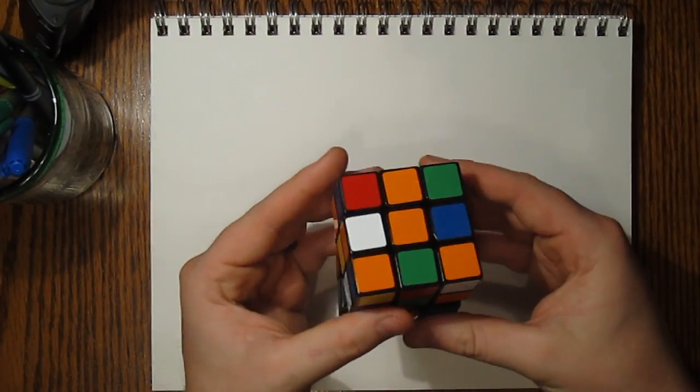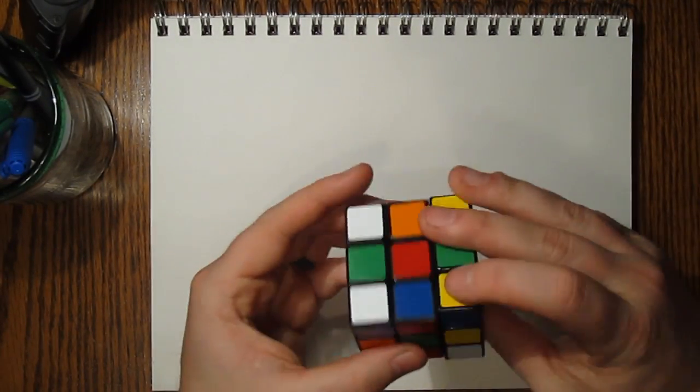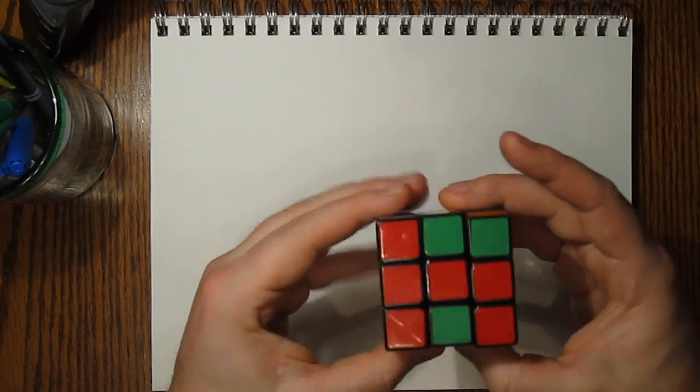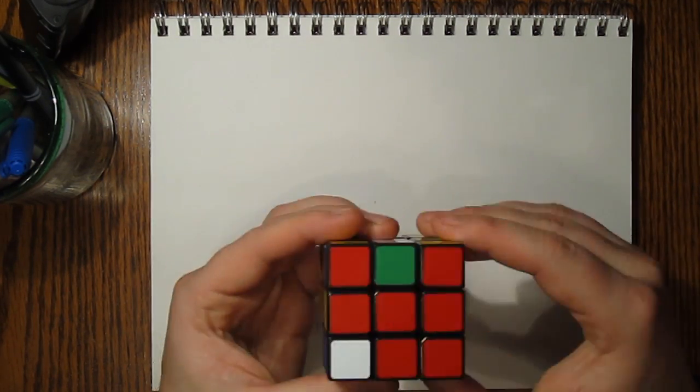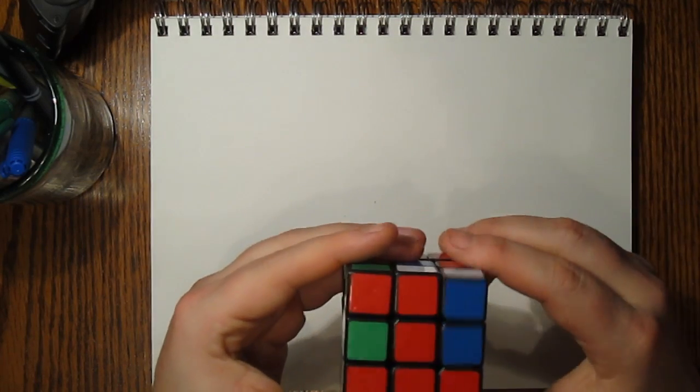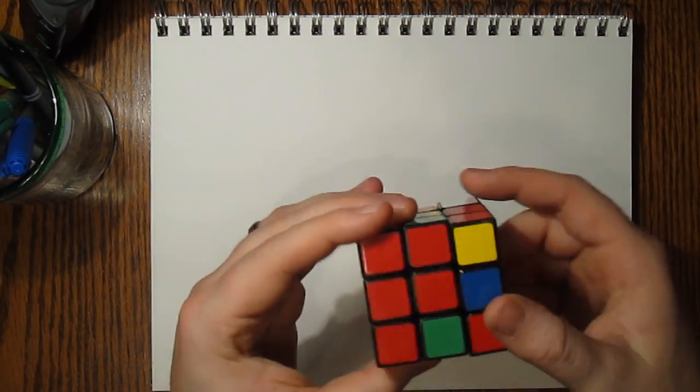Have you ever wondered why a Rubik's Cube is so hard to solve? The reason the Rubik's Cube is so hard to solve is because a Rubik's Cube can be twisted into many different positions, yet there is only one position that is solved.